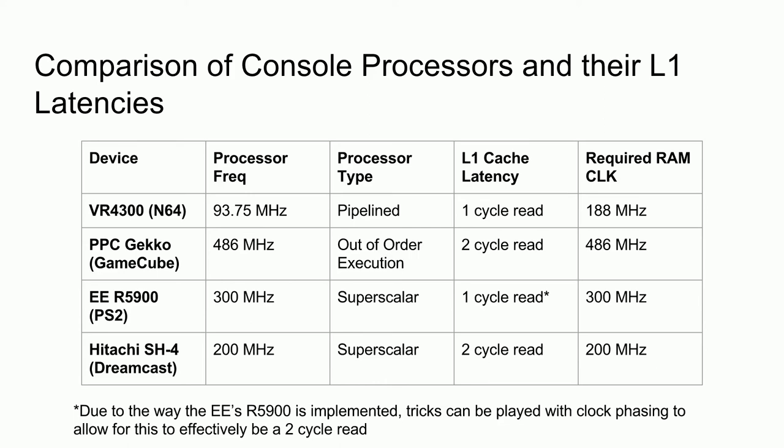Another thing to take note of is the type of processors used. All of these processors are pipelined, which means that a single instruction takes multiple cycles to complete. However, multiple instructions are at different stages of completion at any given time. For example, while one is being executed, the next instruction is being decoded, and the one after that is being fetched from memory. The superscalar processors are also pipelined, with the exception that they have two pipelines so that they can work on two instructions simultaneously — effectively just duplicate hardware and some complicated issue logic. The most interesting is the Gecko, which is an out-of-order execution processor, like most modern AMD and Intel processors. These have multiple pipelines to work on multiple instructions at once, effectively executing everything and sorting out the order in the end. Implementing such a design would be very difficult and is a topic for a whole series of videos.